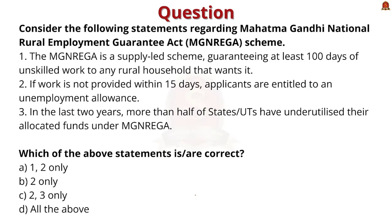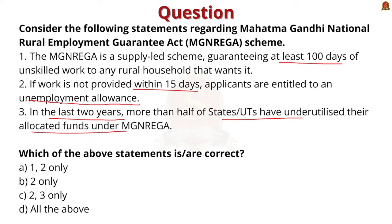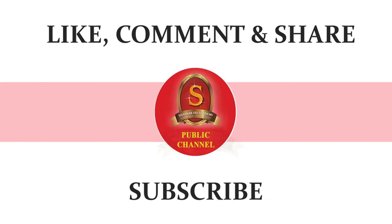Practice Question 3: Consider the following statements regarding MGNREGA. Statement 1: MGNREGA is a supply-led scheme guaranteeing at least 100 days of unskilled work to any rural household that wants it. Statement 2: If work is not provided within 15 days, applicants are entitled to an unemployment allowance. Statement 3: In the last two years, more than half of states or union territories have underutilized their allocated funds under MGNREGA. The correct answer is Option B — 2 only. That's all for today's discussion. If you like this video, please hit like, share, and comment. Thank you.